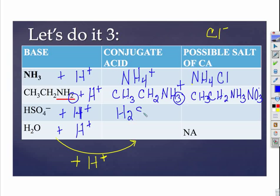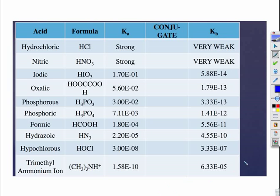Now, H₂SO₄ — that's not an anion, that is an acid. And you know what? That's in theory. In theory we could form that conjugate acid, but in practice it goes 100% the other way. But it does demonstrate the principle for us.